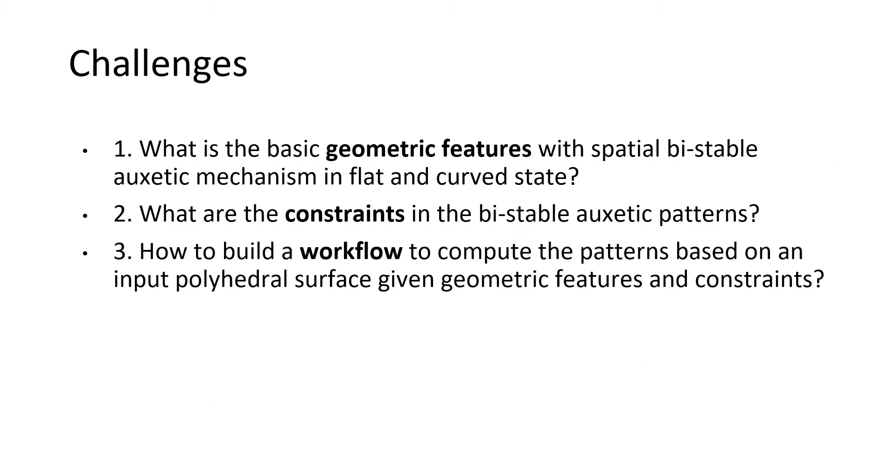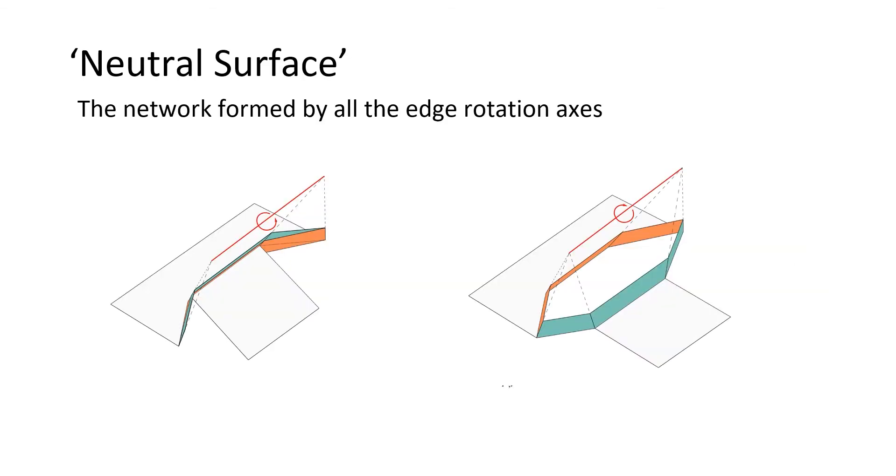Having analyzed the geometry feature and constraints of bistable auxetic reconfiguration, we can start to discuss how to automate the design of patterns for a target surface. As we mentioned before, we have a remote axis which two faces rotate around. How do we locate those axes so that it can unroll our target surface into a flat plane?